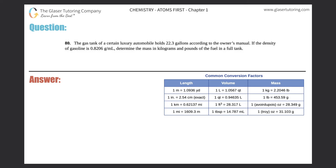Number 80: The gas tank of a certain luxury automobile holds 22.3 gallons according to the owner's manual. If the density of gasoline is 0.8206 grams per milliliter, determine the mass in kilograms and pounds of the fuel in a fuel tank.